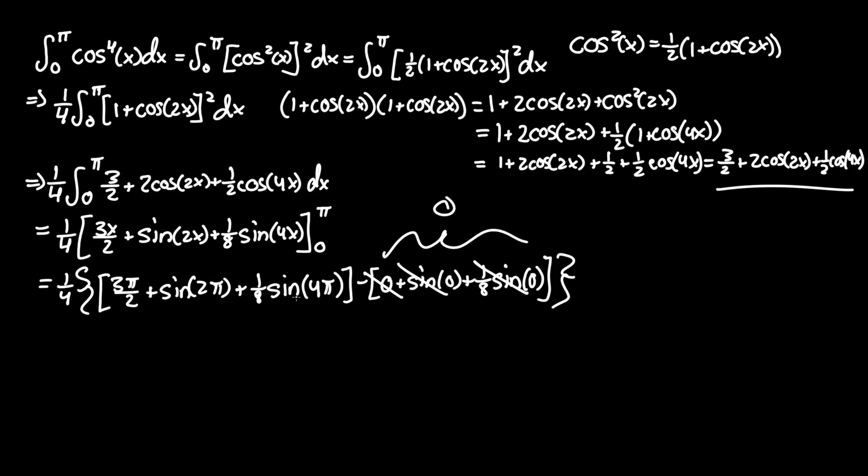Sin(4π) times 1/8, it doesn't matter, becomes 0. Sin(2π) becomes 0. All we're left with is 1/4 times 3π/2, which gives us our final answer of 3π/8.